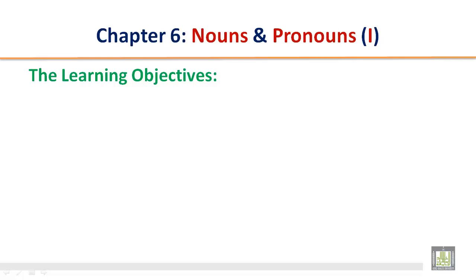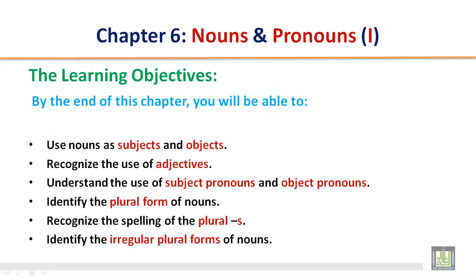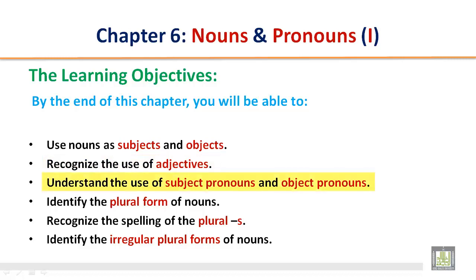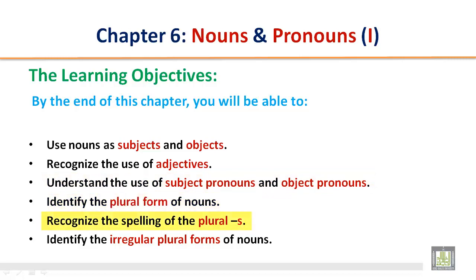The Learning Objectives. By the end of this chapter, you will be able to: use nouns as subjects and objects, recognize the use of adjectives, understand the use of subject pronouns and object pronouns, identify the plural form of nouns, recognize the spelling of the plural S, and identify the irregular plural forms of nouns.